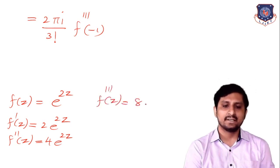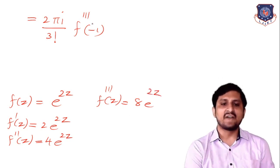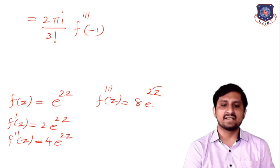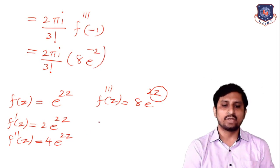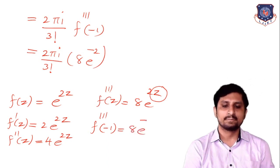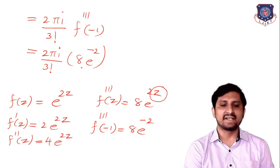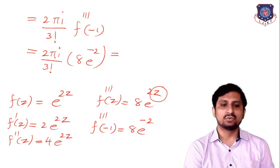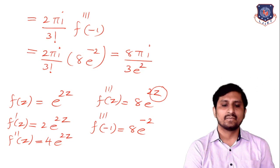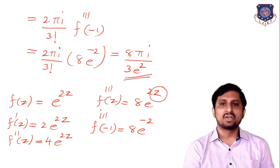The third derivative at z = −1 is 8e^(−2). So the integral equals 2πi upon 3 factorial times 8e^(−2). Since 3 factorial = 6, this simplifies to 8πi upon 3 times e^(−2). This is the final answer for this example.